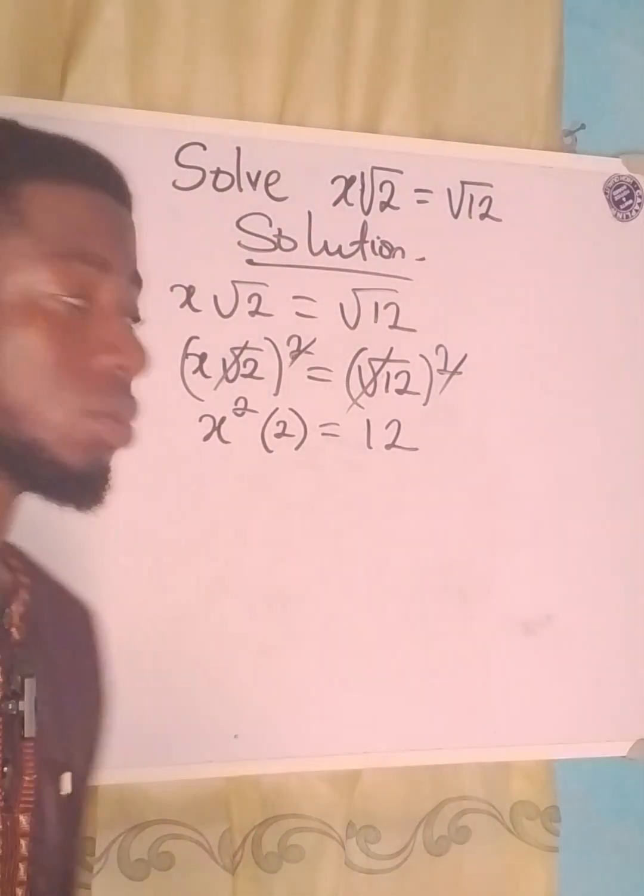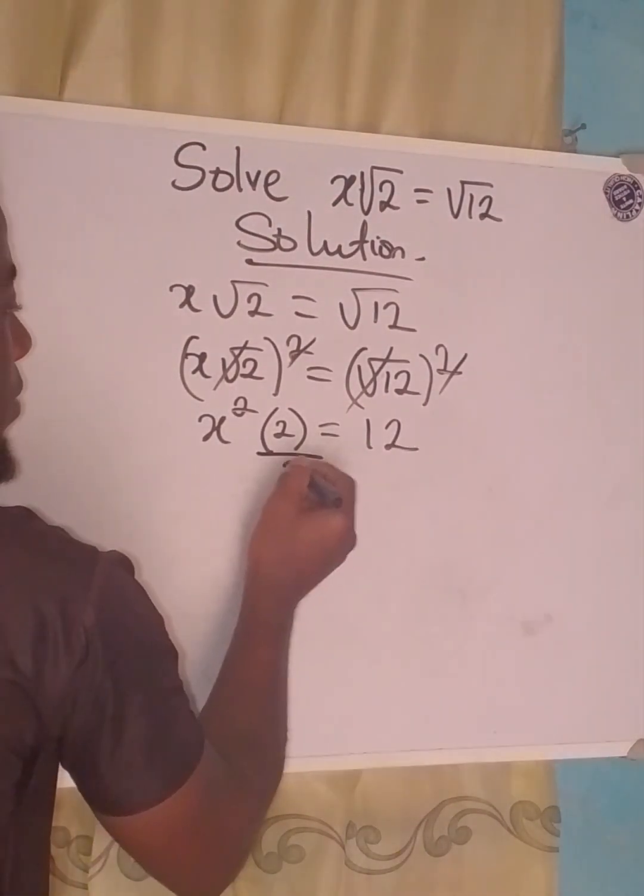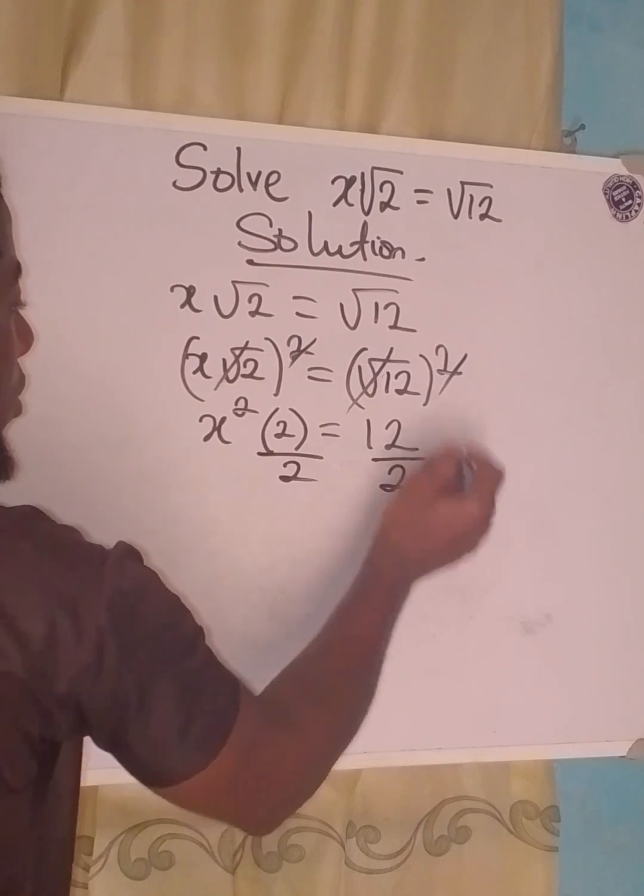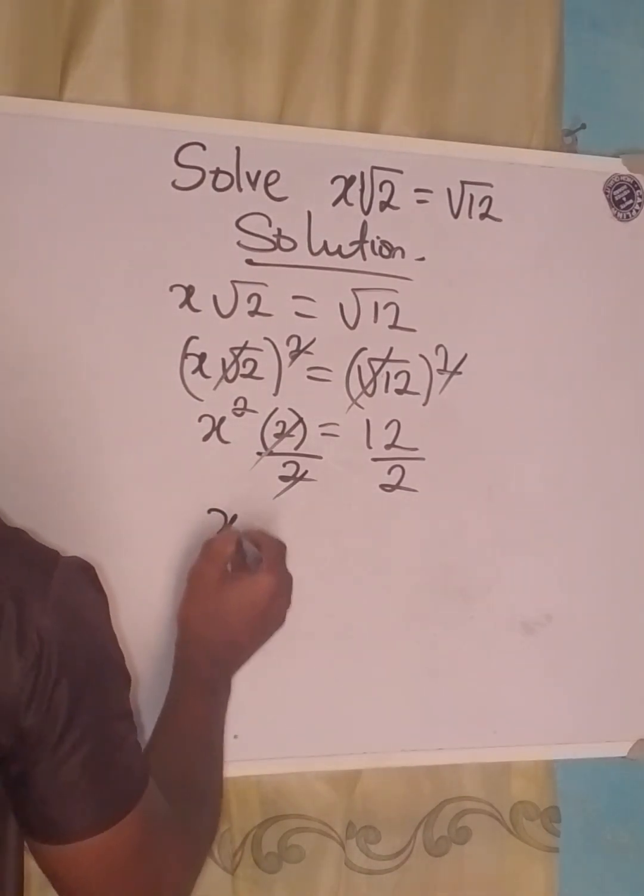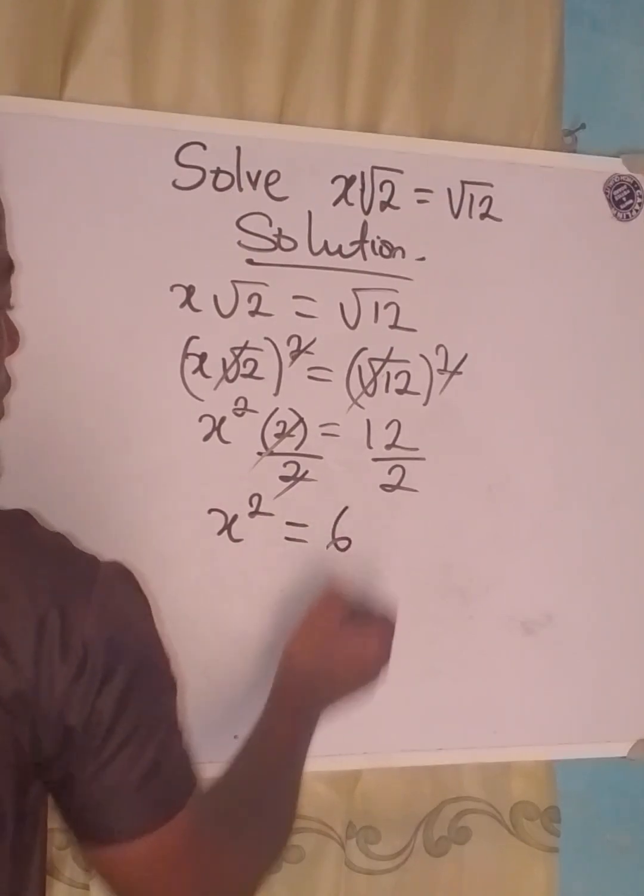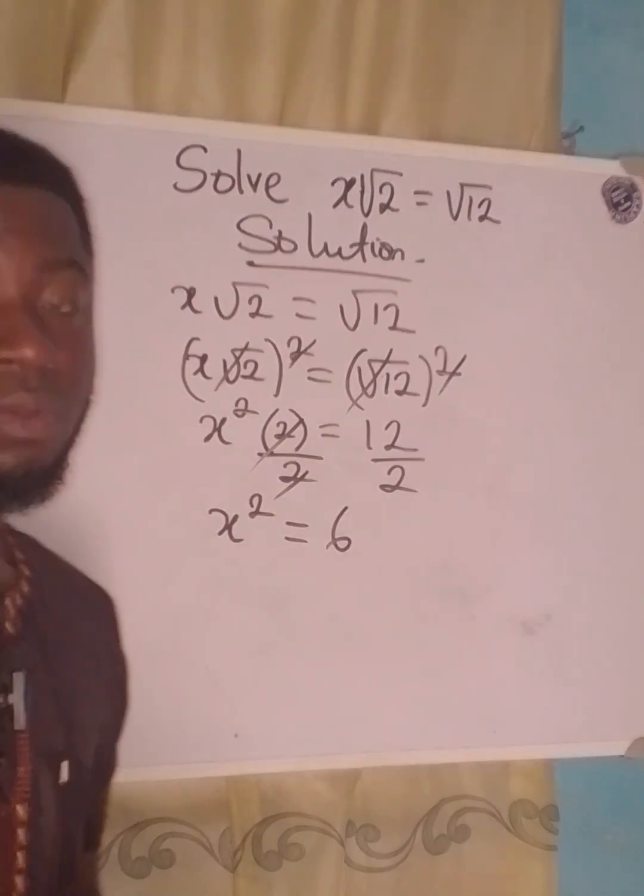To proceed from here, we divide this by 2 and divide the other side by 2. The 2s cancel, and then x² = 6. But mind you, we are looking for x, not x².